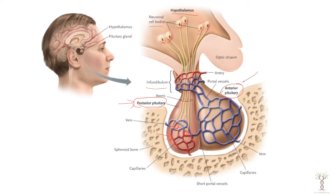The anterior pituitary is controlled by hormones produced by the hypothalamus. Those hormones go into the bloodstream and flow directly to the anterior pituitary gland through portal vessels, which then stimulate the pituitary to make a variety of different hormones.